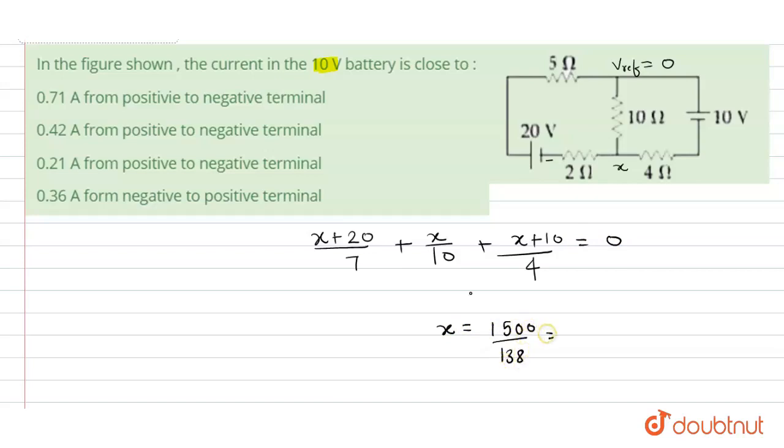We simply apply the application of mathematics. So this value will become negative of 1500 that will be equal to minus 10.87.